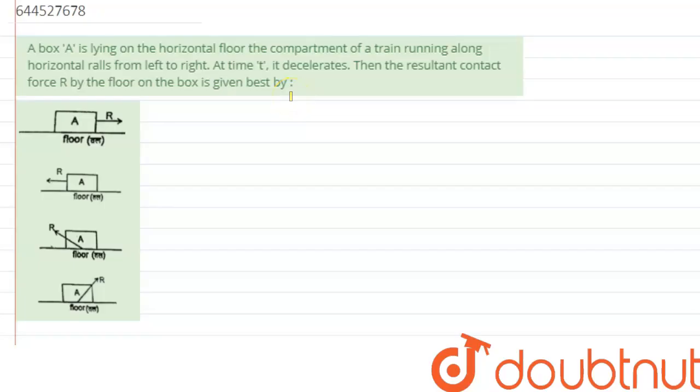A box A is lying on the horizontal floor of the compartment of a train running along horizontal rails from left to right. At time t it decelerates. The resultant contact force